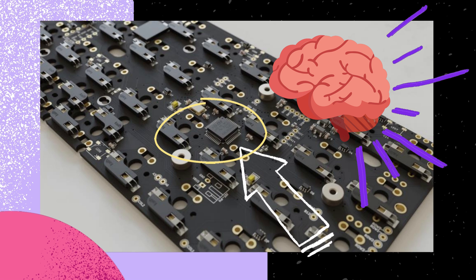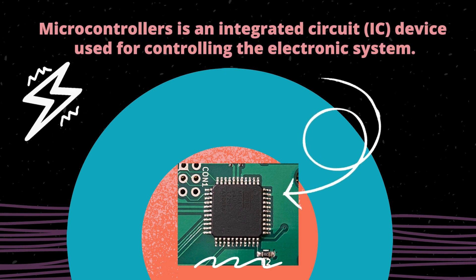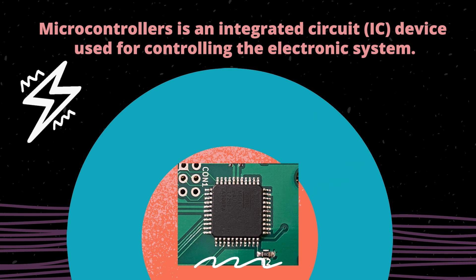A microcontroller is an integrated circuit IC device used for controlling the electronic system. Now, most of the time, microcontrollers can have many other electronic components within it. This is where the term IC comes in.